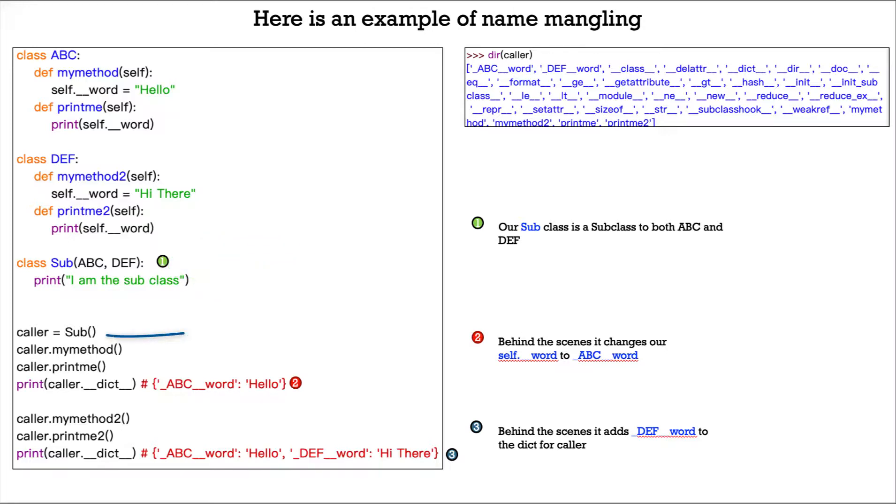Next we have a caller that creates an instance of our subclass, and then we do caller.myMethod. myMethod lives in class ABC, so superclass ABC, and caller.printme also lives in ABC.